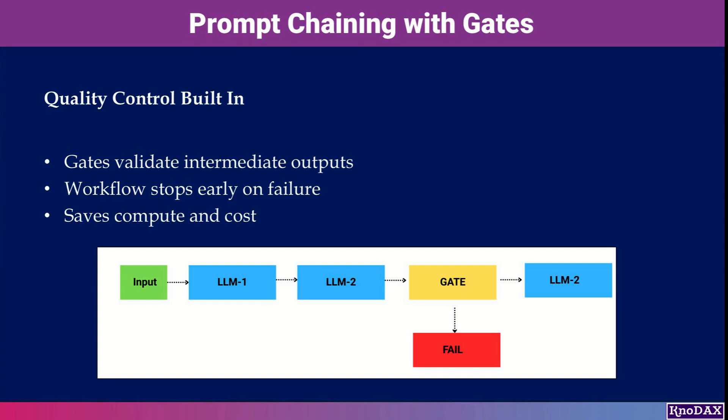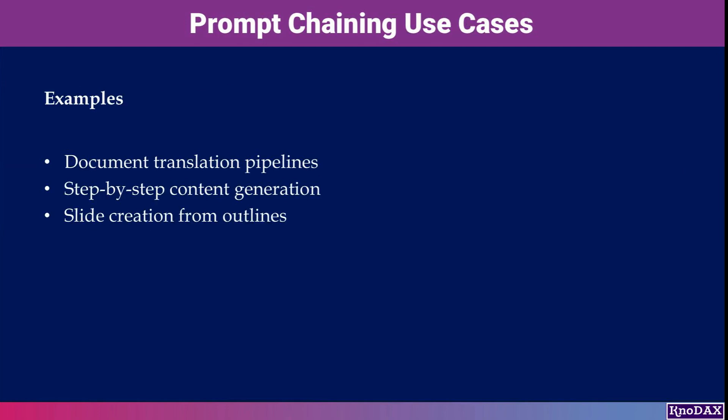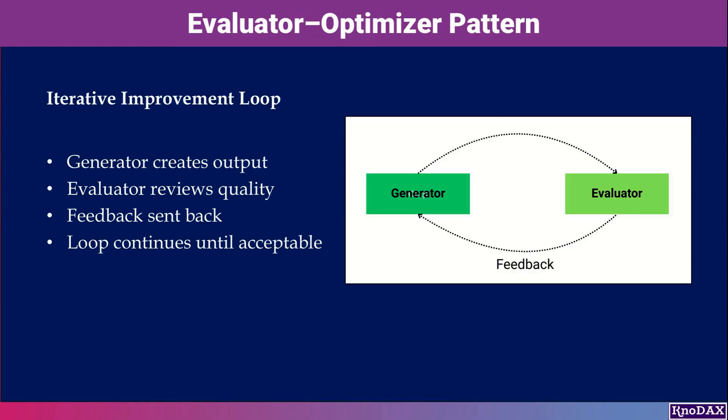If something goes wrong early, the workflow can stop, saving time and compute cost. Common examples include document translation pipelines, step-by-step content generation, or building slides from an outline. In the evaluator-optimizer pattern, one agent generates an output while another evaluates its quality. Feedback is sent back and the loop continues until the output meets quality standards.